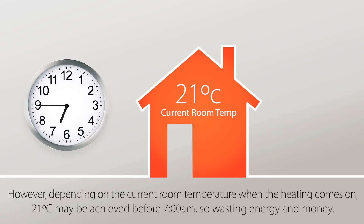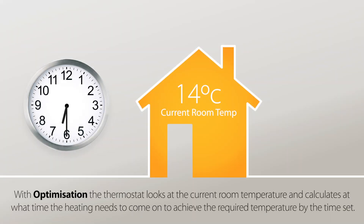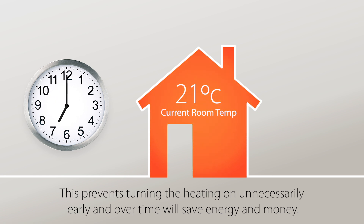However, depending on the current room temperature when the heating comes on, 21 degrees Celsius may be achieved before 7 a.m., so wasting energy and money. With optimization, the thermostat looks at the current room temperature and calculates at what time the heating needs to come on to achieve the required temperature by the time set. This prevents turning the heating on unnecessarily early and over time will save energy and money.